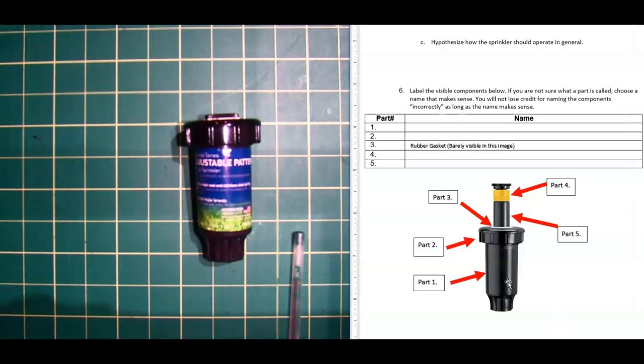So for example, part one, maybe I don't know what it's called, but I know what it does. It is a case. That's it. It is a case. It houses the components of our sprinkler. And so I can just call part one, the housing, or I can call it the casing of the sprinkler. And so hopefully this video has helped you get started on this activity and you can go from here.